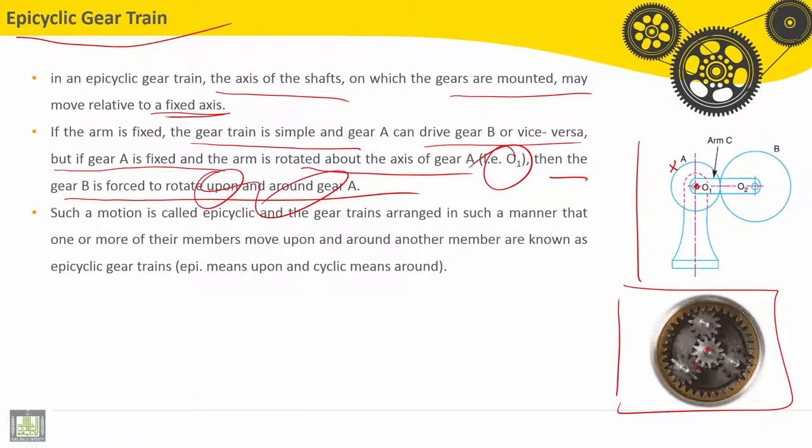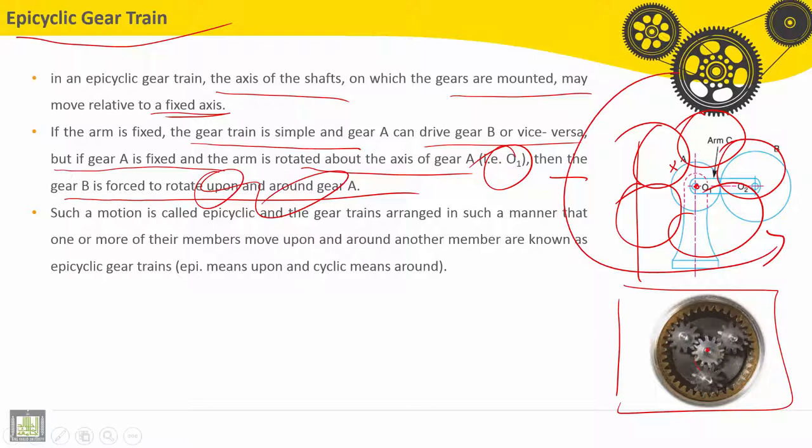Gear B will rotate upon and around gear A. It will do like that, next position, and it will rotate. The arm too rotates.